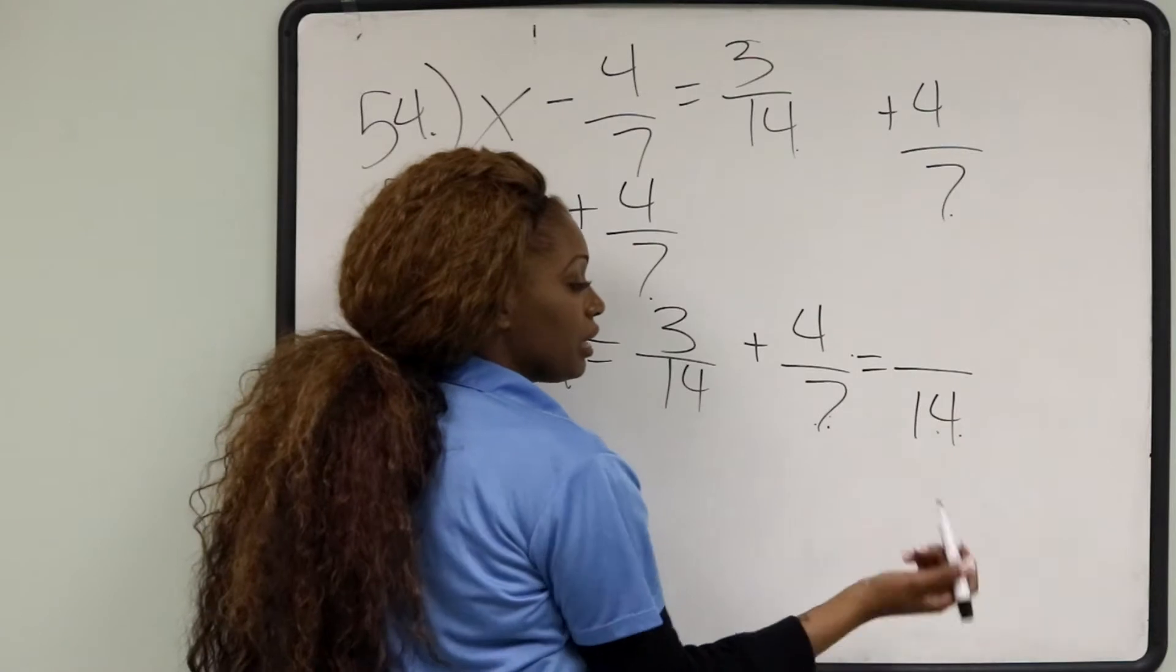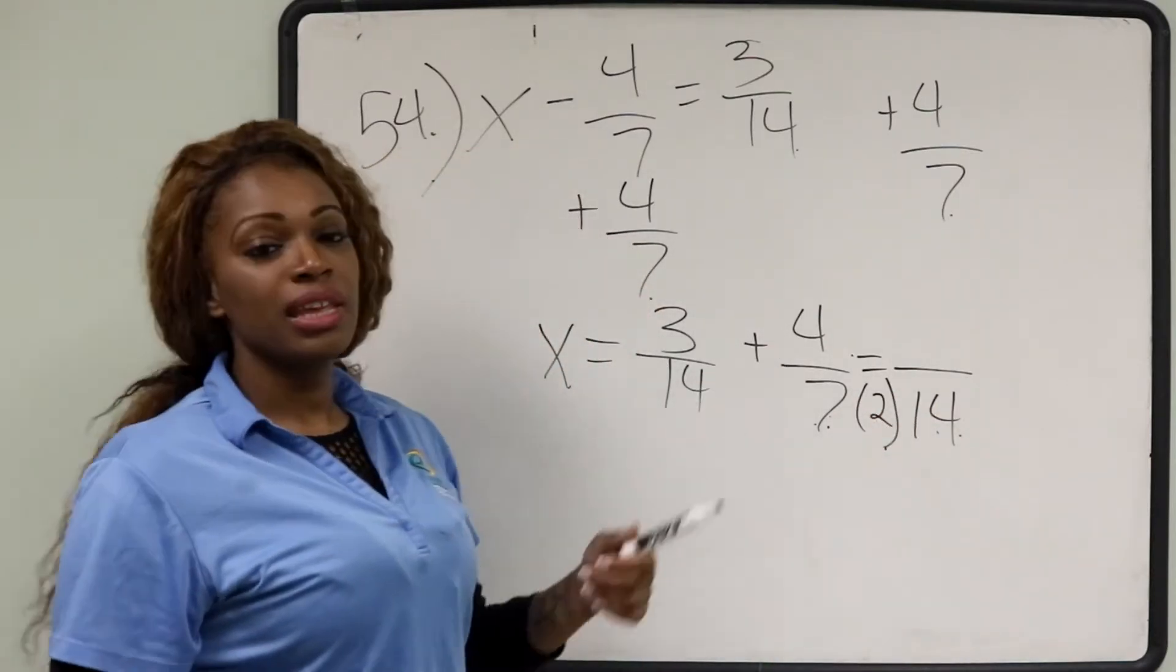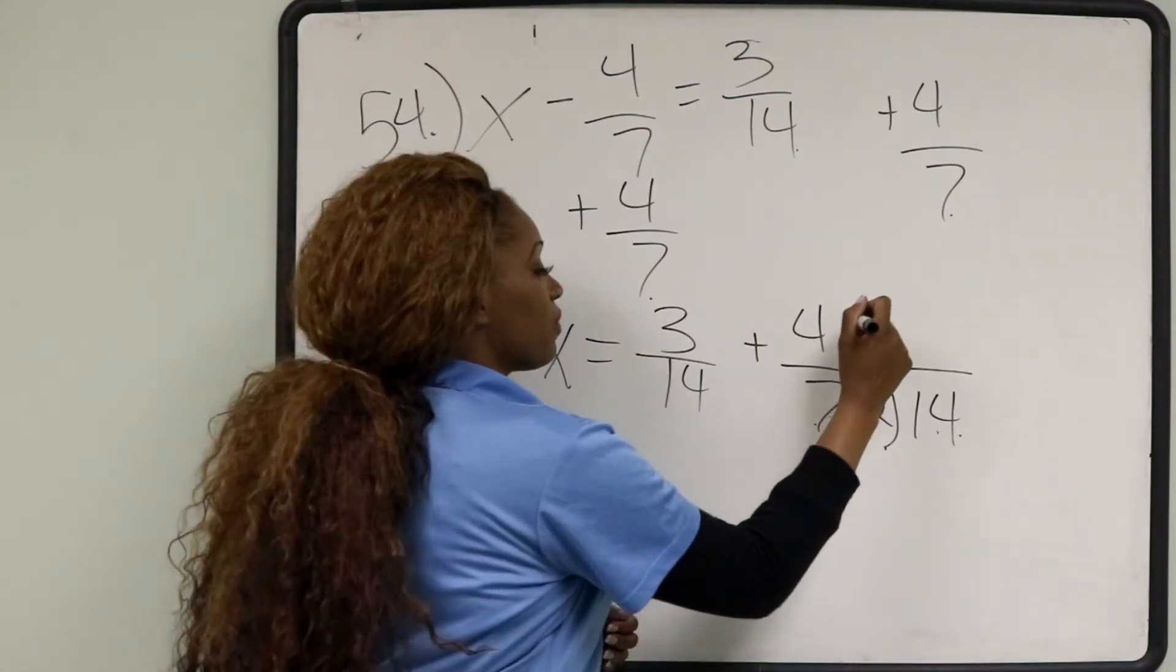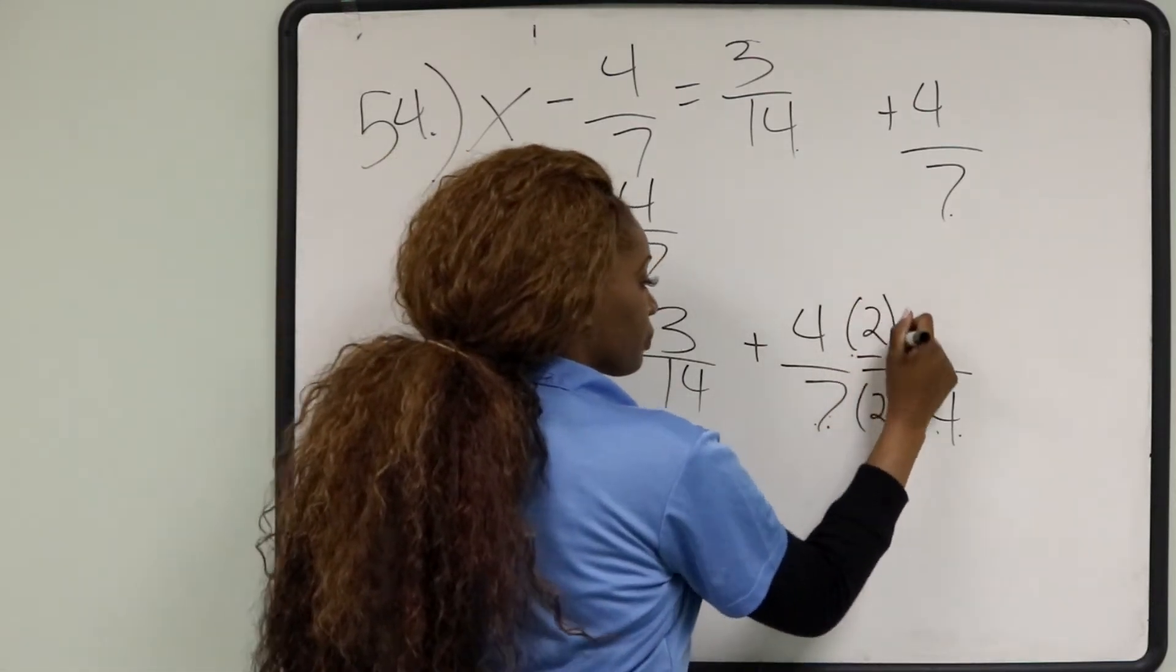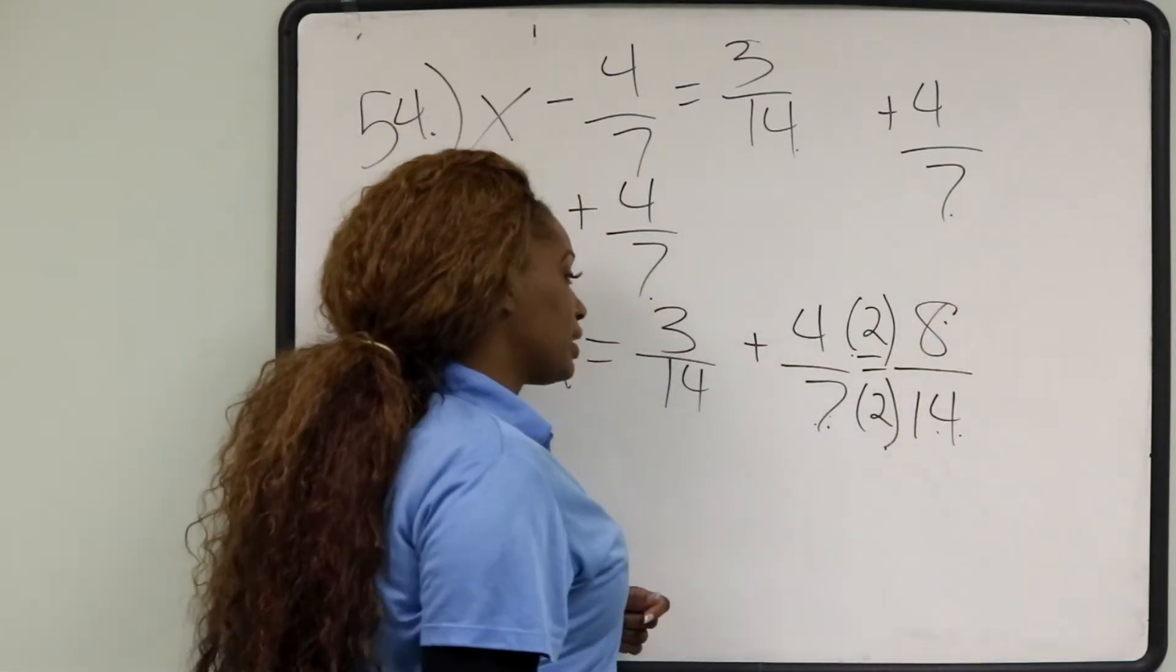To go from 7 to 14, we multiply by 2 in the denominator. And we're going to have to do the same thing in the numerator to make sure the values are equal. 4 times 2 is going to give us 8. We get 8 over 14.